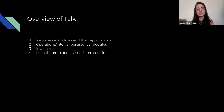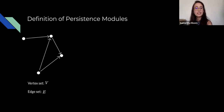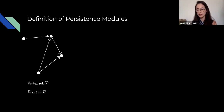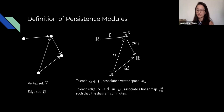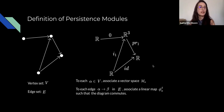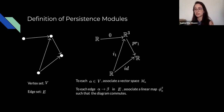Starting with persistence modules: we begin with some directed acyclic graph, assign a vector space to each vertex, and a linear map to each edge. For this talk, all vector spaces are over R, but you can use any field. This resulting concept is called a persistence module.